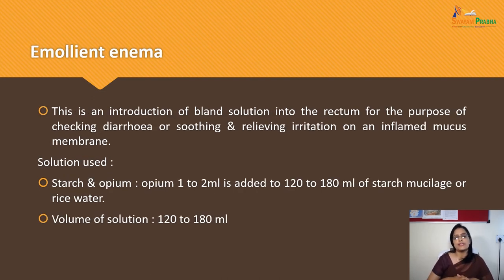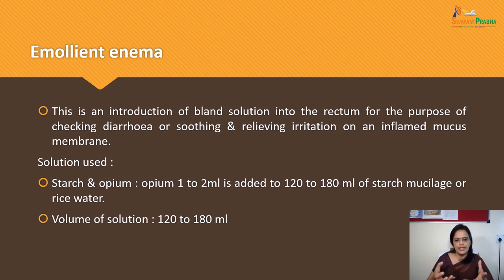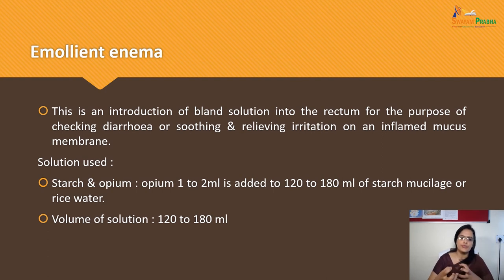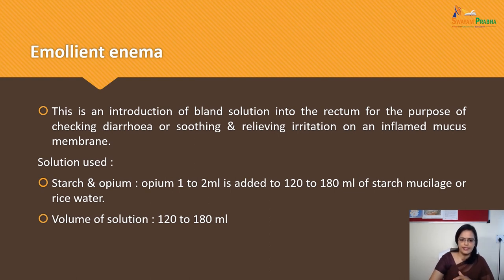Emollient Enema is the introduction of a solution into the rectum for the purpose of checking diarrhea or relieving irritation of an inflamed mucous membrane. The solution used is opium 1 to 2 ml added to 120 to 180 ml of starch mucilage or rice water; starch mucilage alone 120 to 180 ml. Temperature is 100 to 105°F.